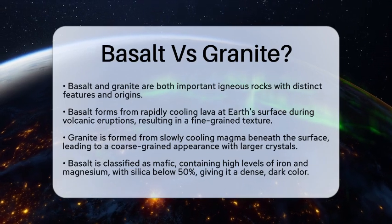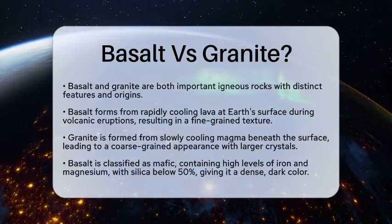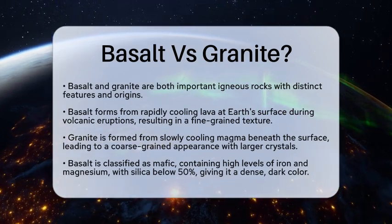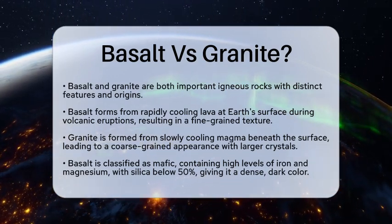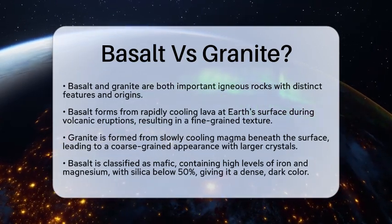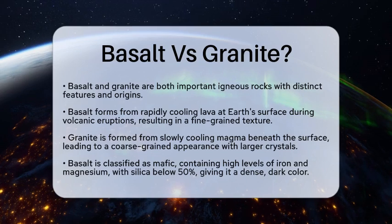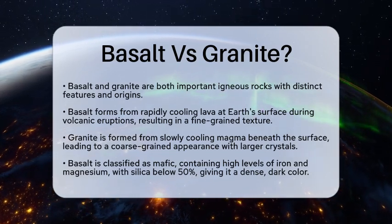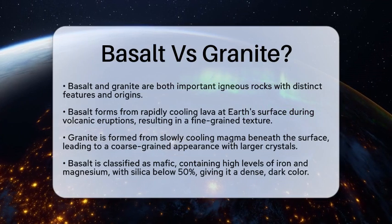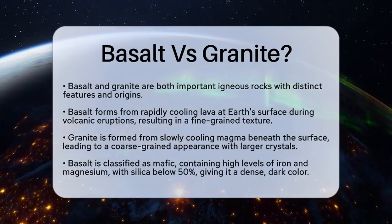First, let's talk about how they form. Basalt is created from lava that cools quickly at Earth's surface during volcanic eruptions. This rapid cooling prevents large crystals from forming, resulting in a fine-grained texture. On the other hand, granite forms from magma that cools slowly beneath the surface. This slow cooling allows larger crystals of minerals like quartz, feldspar, and mica to develop, giving granite its coarse-grained appearance.